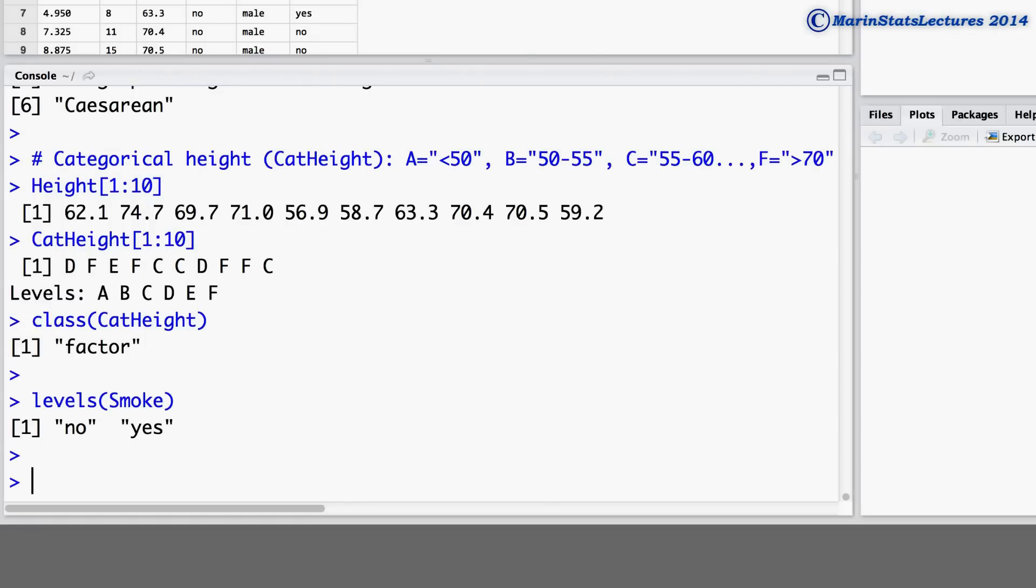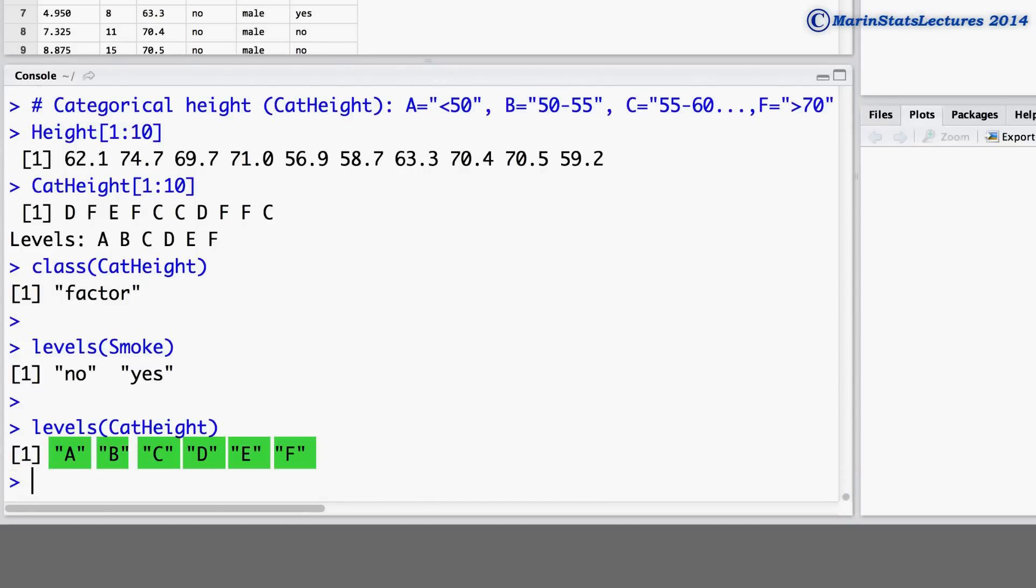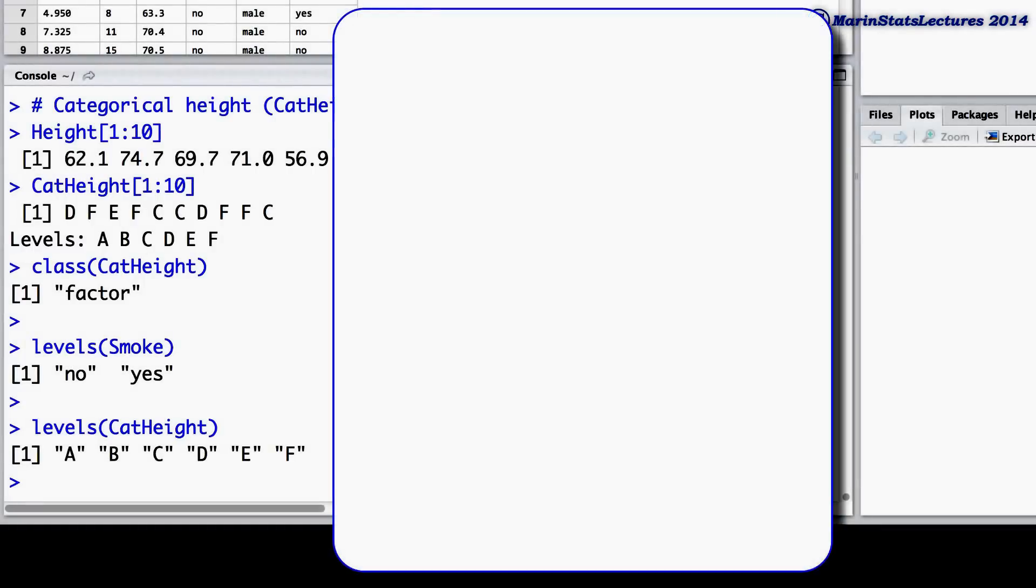Now let's go over this same idea but this time using the categorical height variable. You'll notice that categorical height has 6 levels, therefore we will need 5 dummies or indicators to represent this. We can create an indicator or dummy we'll call xB, and we will set this equal to 1 if the individual is in height category B and 0 otherwise.